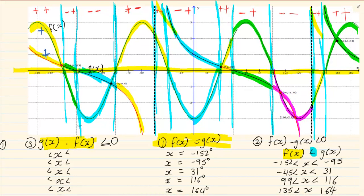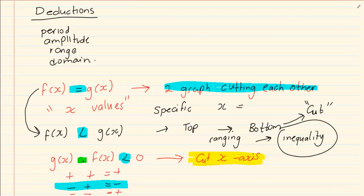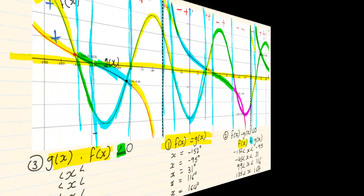Now let's look at the question again. It says where is f(x) × g(x) smaller than 0? We know when it is smaller than zero we need a plus and a minus. Now where is a plus and a minus? We have a plus and minus at this area, here's another plus and minus, another one, another one and another one.